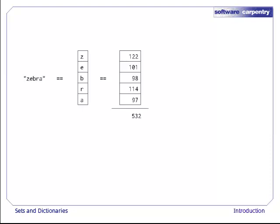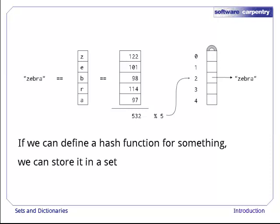We can add up these integers to produce a number that will be the same for every copy of the string zebra. And once we have this integer, we can use mod as before to figure out where in the hash table the string should be stored. In general, if we can define a hash function for something, i.e., if we can figure out how to turn that something into an integer, we can store it in a hash table.